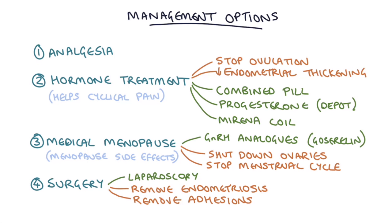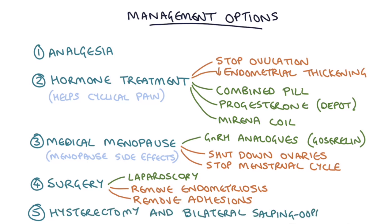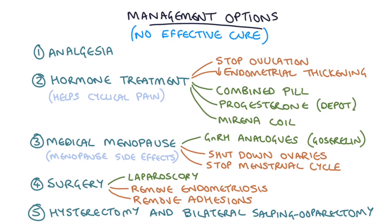The final step for women with really severe endometriosis not responding to other treatments is a hysterectomy combined with a bilateral salpingo-oophorectomy — removing the ovaries and tubes as well. During this procedure, as much endometriosis as can be found is removed. Removing the ovaries and endometrial tissue induces the menopause and should help to improve symptoms. However, this isn't a guaranteed cure, and there's no really effective cure for the condition, making it quite a drastic decision, especially for a younger woman.